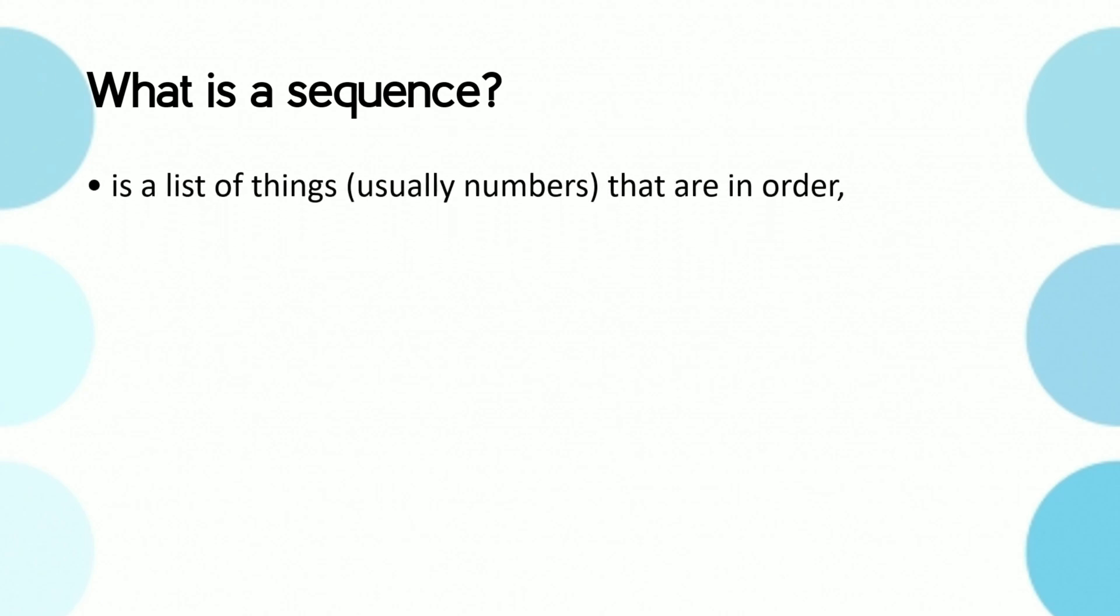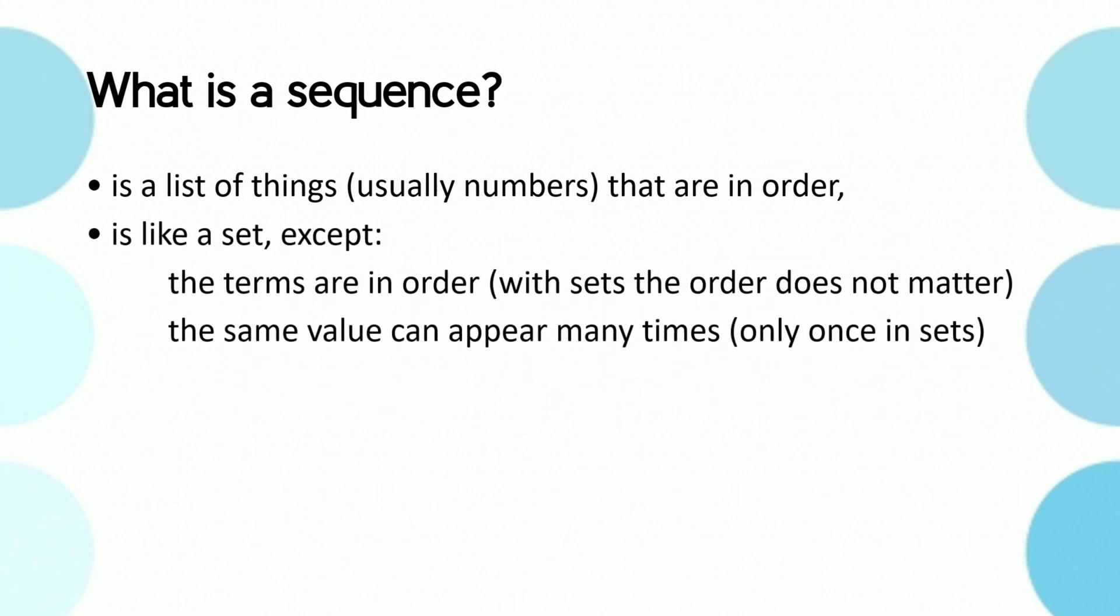When we say the terms are in order, we are free to define what that is. They could go forwards, backwards, or they could alternate, or any type of order we want. A sequence is like a set.